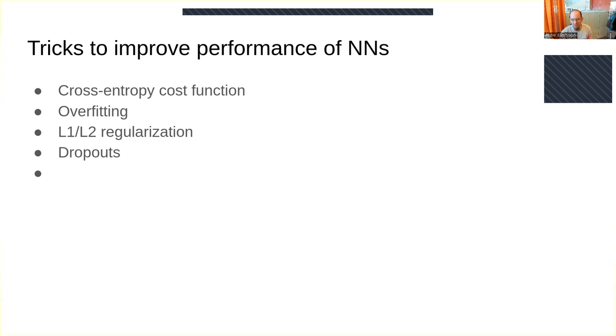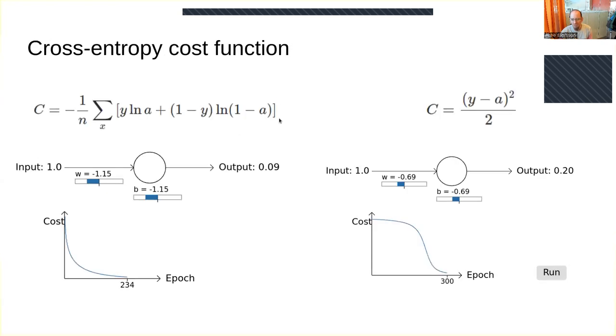Normally you have a square error cost function - the output minus the real value, squared, divided by the number of outputs. If you're training a single layer network as exemplified in the book, it takes several hundred iterations, especially starting far from the optimal value of zero.